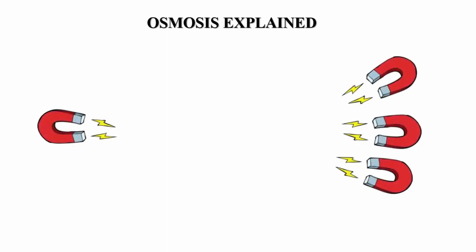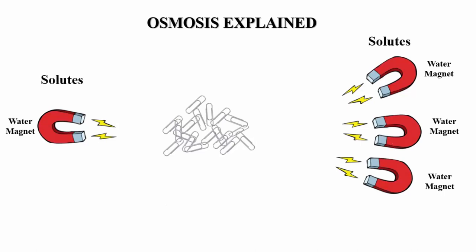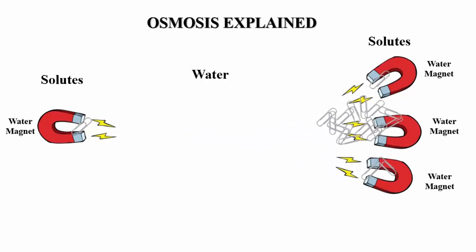Let's visually explain osmosis. Suppose we have a table: on one side we put one magnet, on the other side a whole bunch of magnets, and in the center a bunch of paper clips. The magnets represent our water magnets — solutes. The paper clips represent water. If these magnets are pulling on the paper clips, most of the paper clips will be pulled to where there are more magnets.